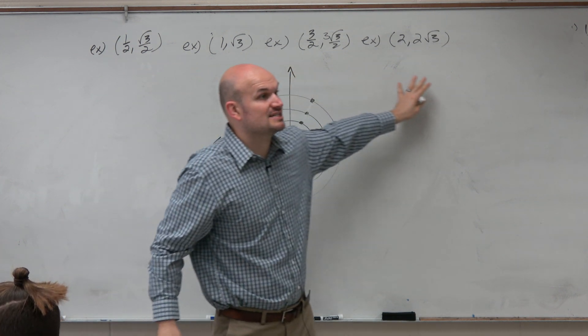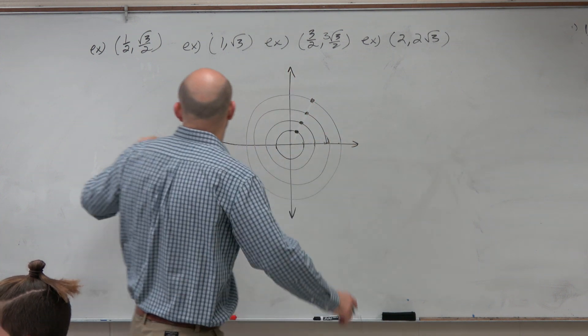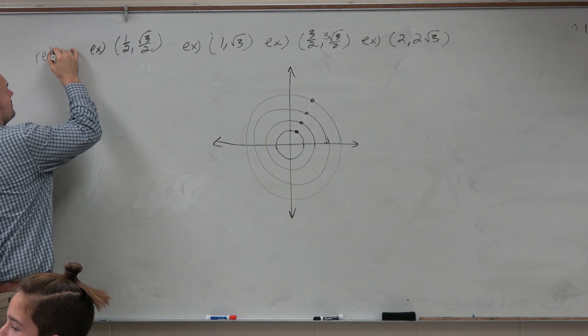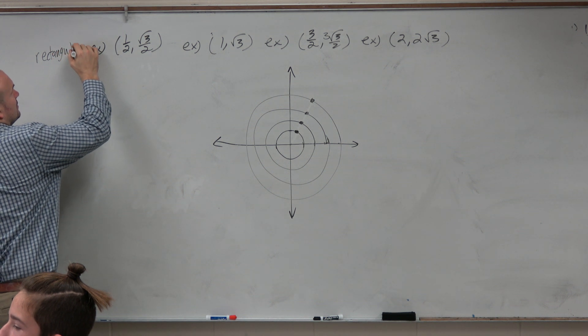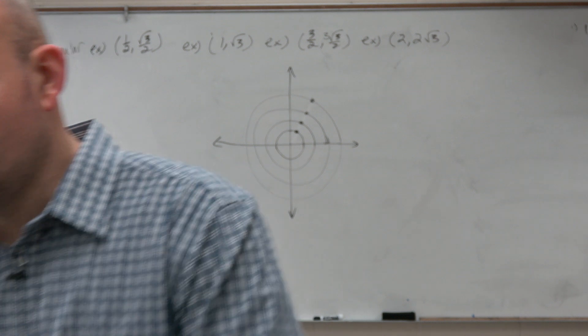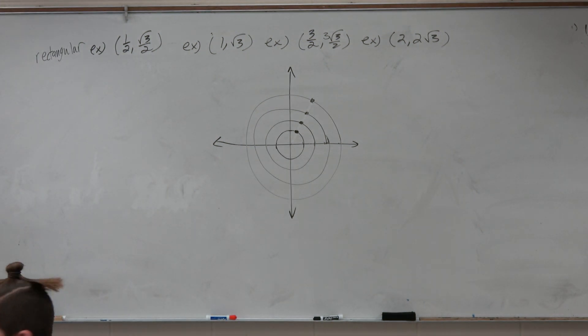Now, these are the x and y-coordinates, right? These are what we call rectangular points. And rectangular points have coordinates x and y, which you're familiar with.